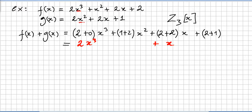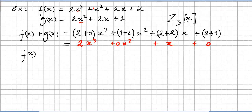The sum f(x) + g(x) = 2x^3 + x. The x^3 coefficient is just 2 (no x^3 in g), then 1 + 2 = 3 = 0 in Z_3 for x^2, then 2 + 2 = 4 = 1 in Z_3 for x, and 2 + 1 = 3 = 0 in Z_3 for the constant. Now try to compute the product f(x)·g(x) — pause and work it out.